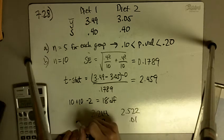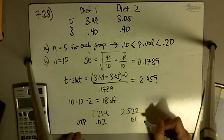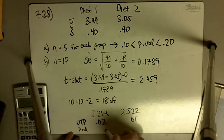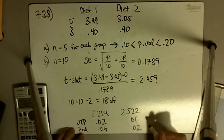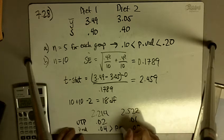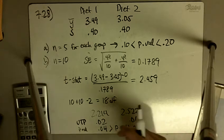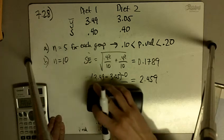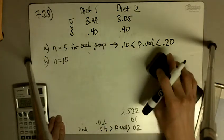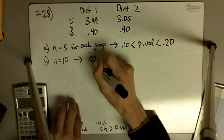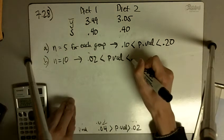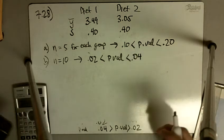So our p-value is going to be, we have to double this, so we have 4% and 2%. So our p-value is in between 4 and 2%, so with n equal to 10, that leads us to 2% is less than our p-value is less than 4%.